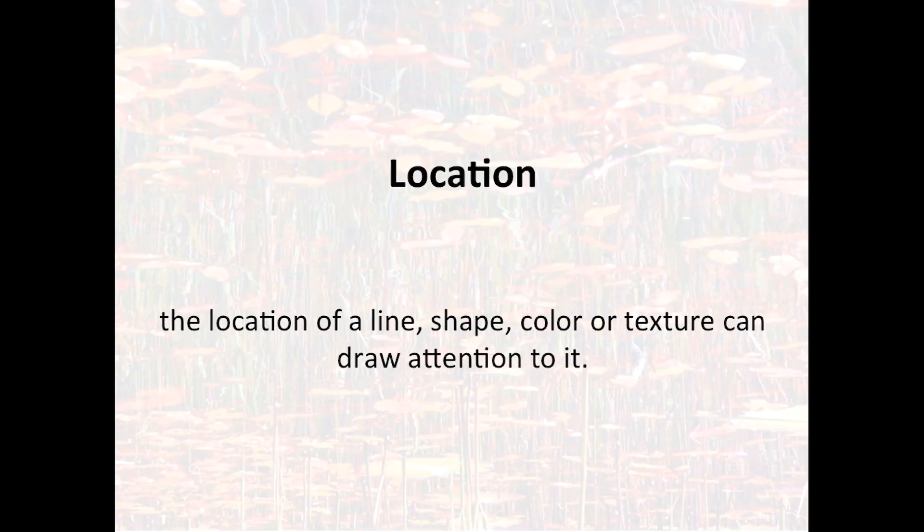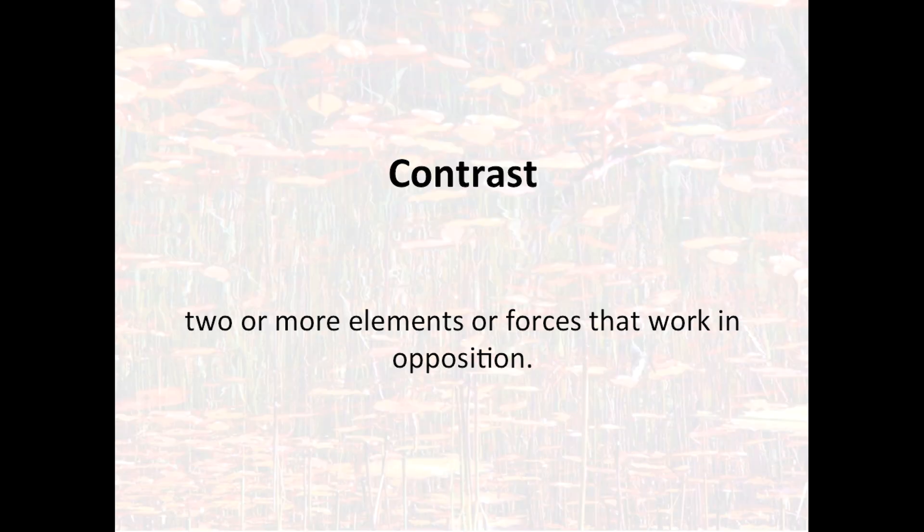Location is the placement of a design element that can draw attention to it. In Barnett Newman's painting, a red line placed slightly off-center, with red lines on one edge and then balanced on the other side, demonstrates how simply the location and color of elements can make them stand out.